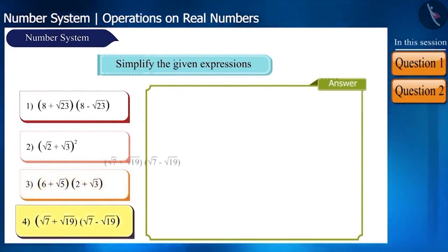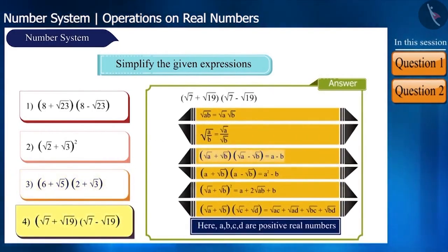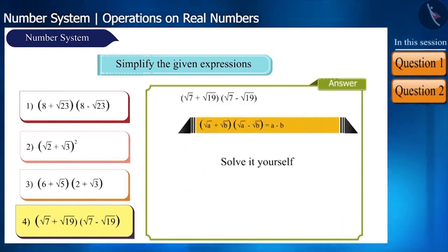Now let's take the last expression. This identity is in the form of root A plus root B, root A minus root B is equal to A minus B. Solve it yourself.